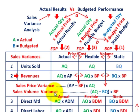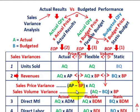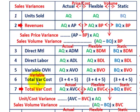For our sales volume variance based on revenues, that's simply comparing our flexible and static amounts. Both share the budgeted price, so we factor that out. The difference is between our actual quantity (AQ) and our budgeted quantity (BQ). So the sales volume variance equals: (AQ − BQ) × BP. You can see that the volume variance is based on quantities, while the price variance is the difference between actual and budgeted prices.